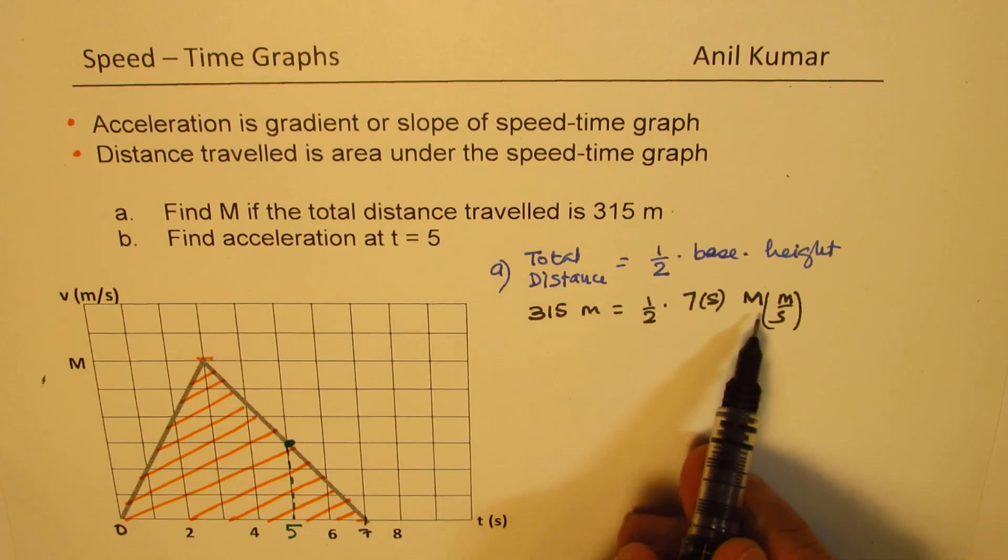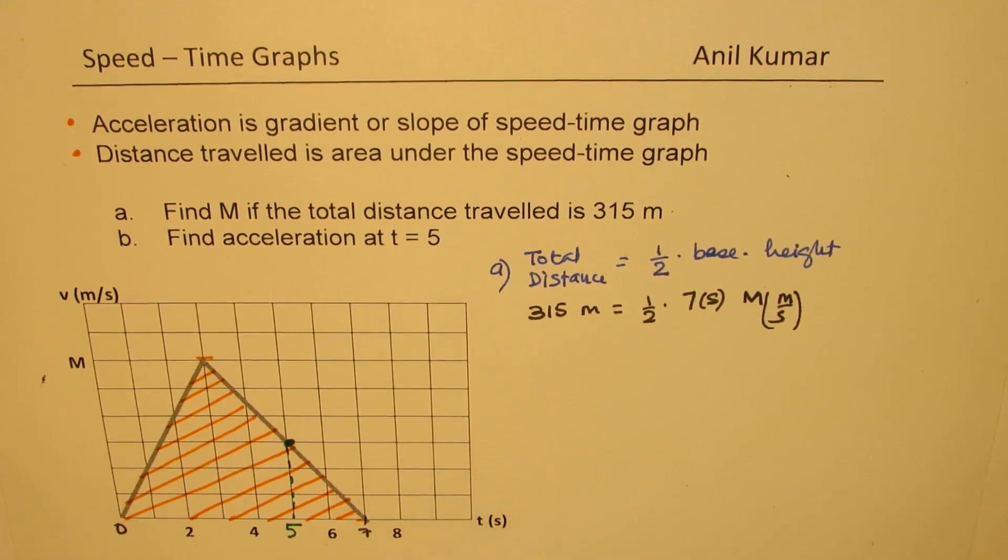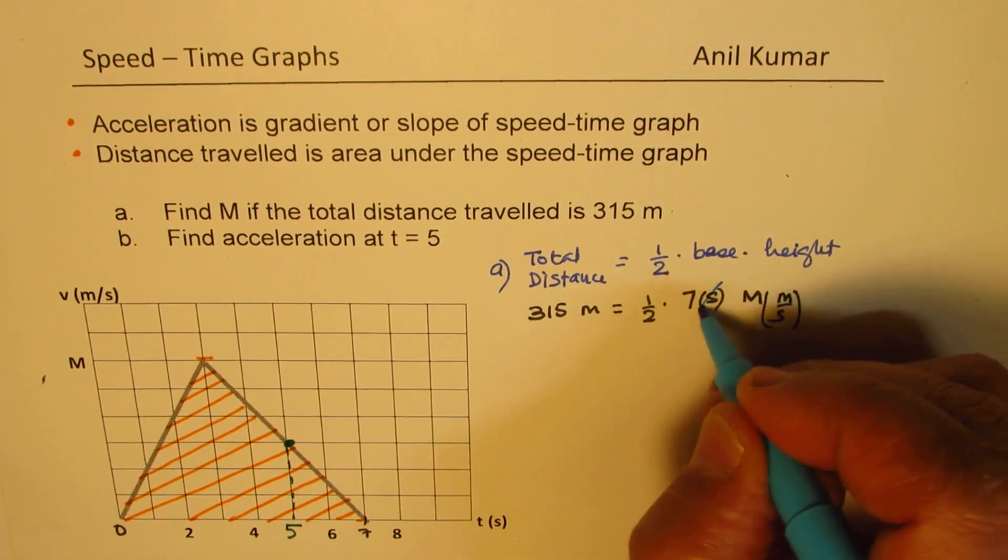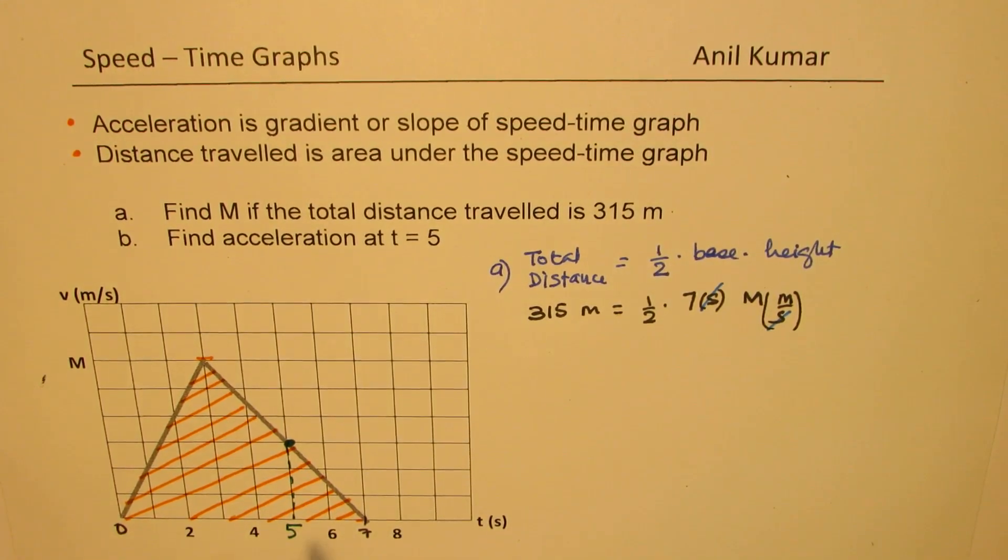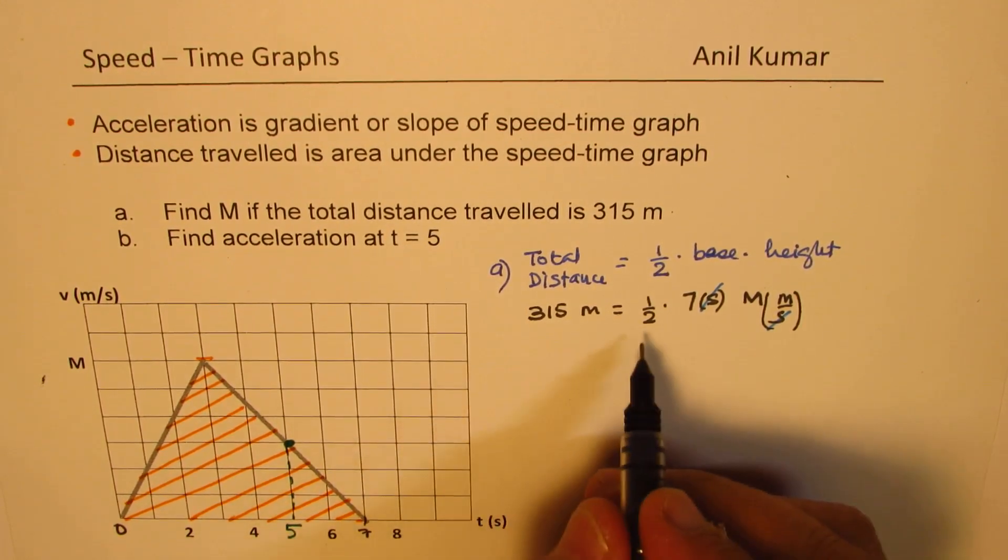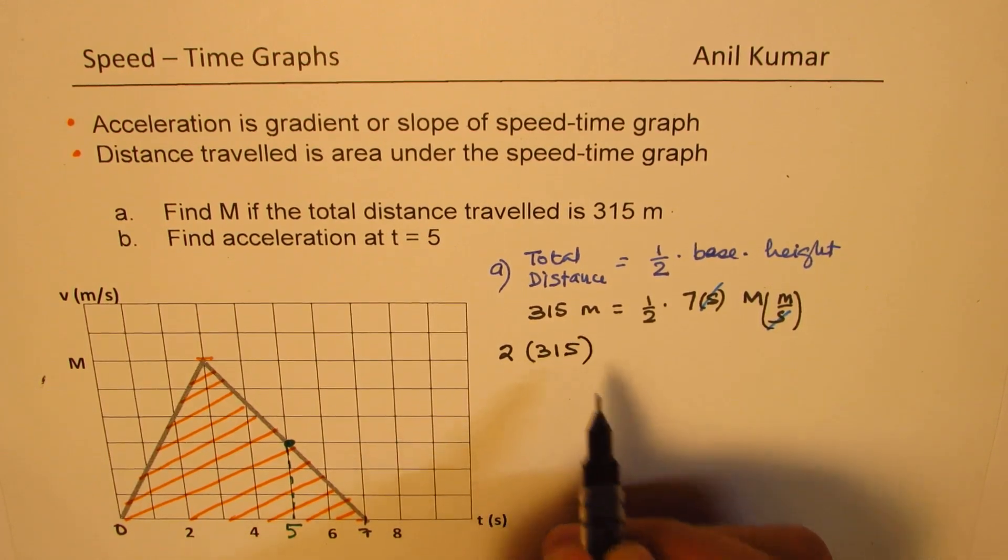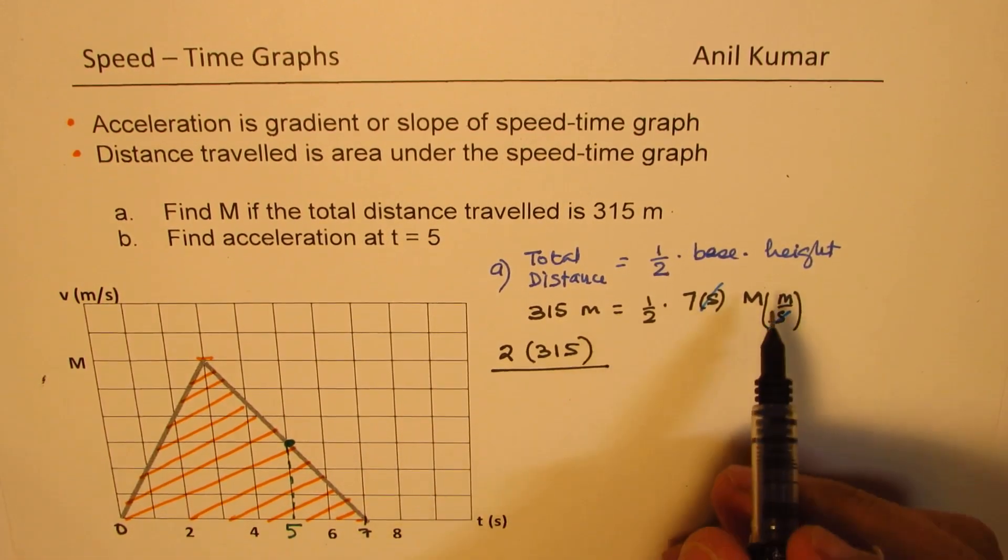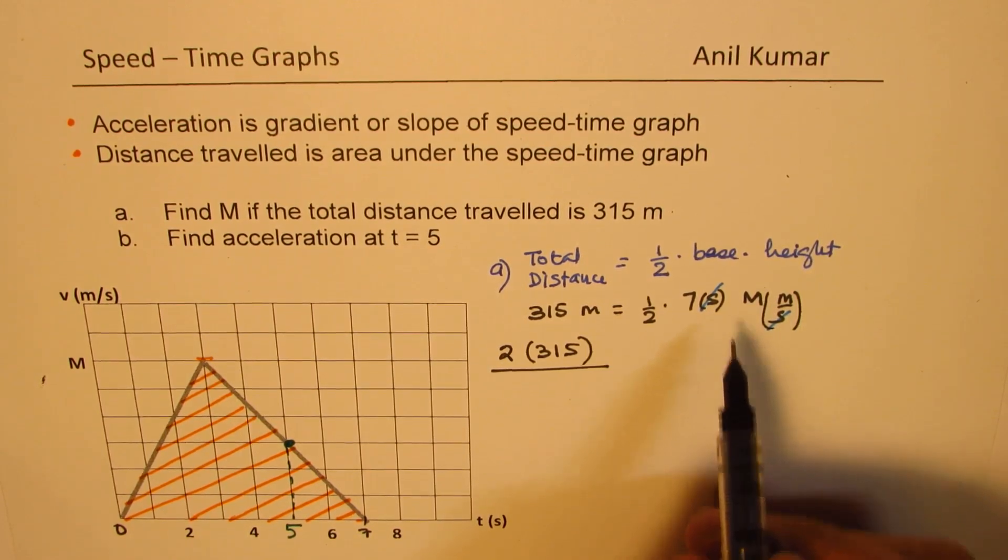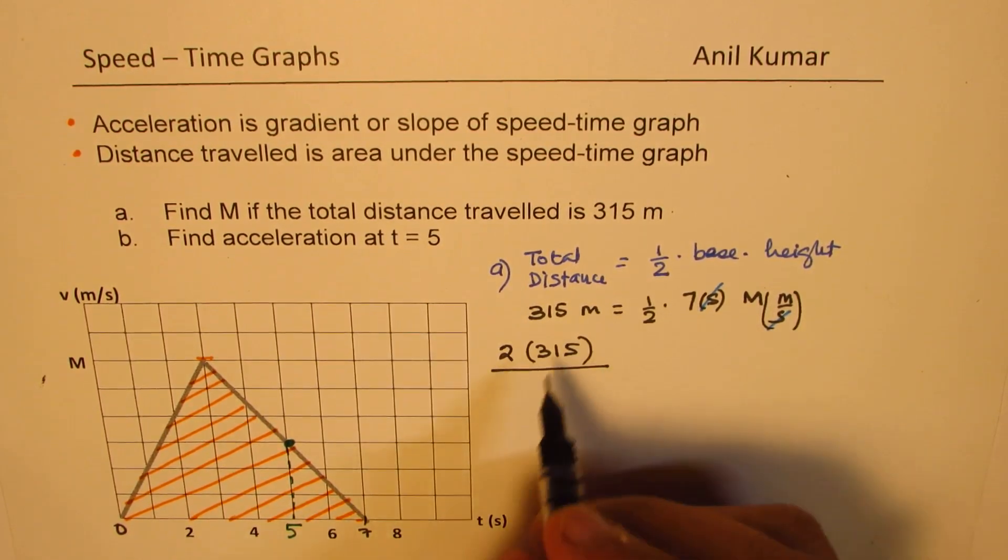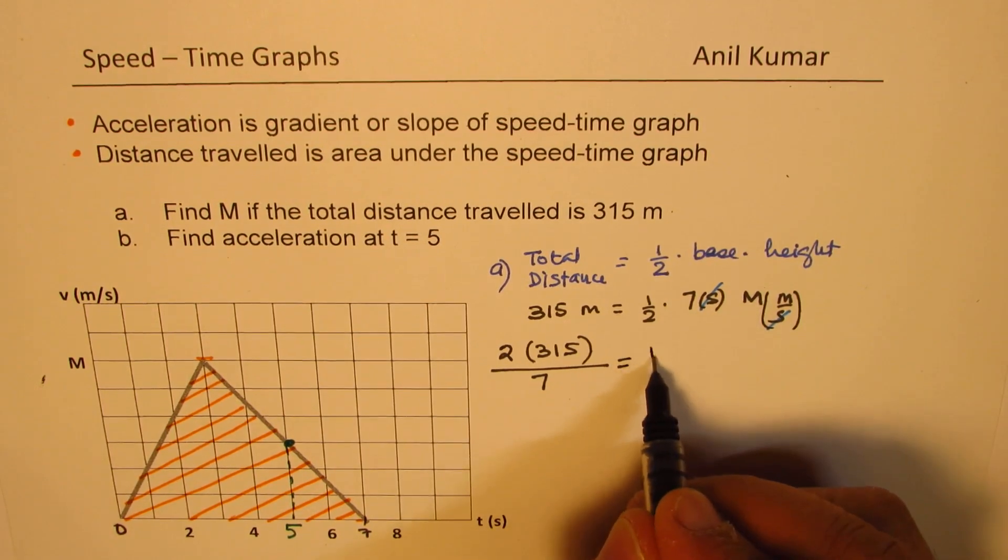So now from here, m will be what? Let's take care of the units. These two cancel. And so what we have, the units match. Perfectly fine. And from here, we can find what m is. So m will be equal to, let's cross multiply. So it will be 2 times 315 over 7. So that should be the value of m.